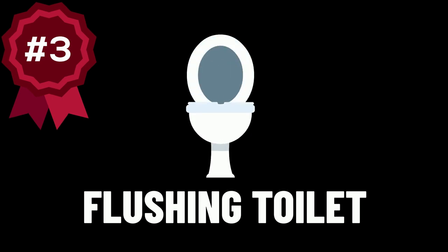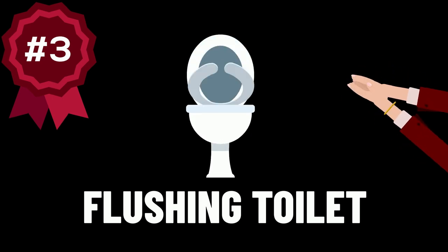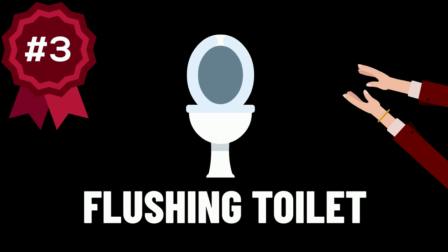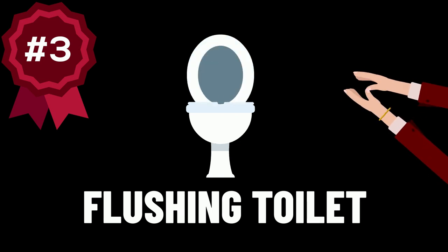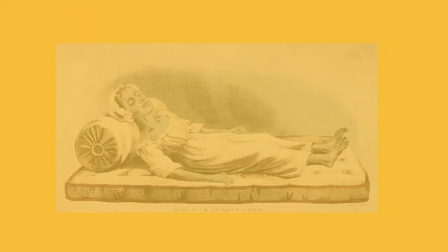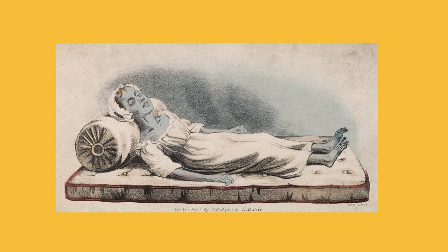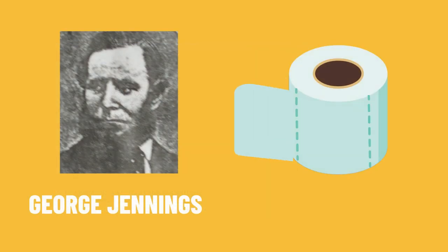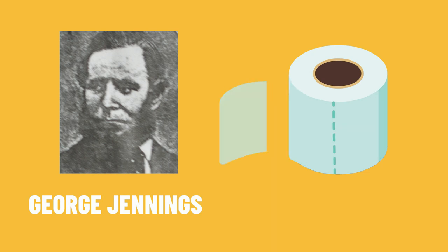Our next Victorian invention is one we can all be very grateful for: the flushing toilet. In Victorian London there were huge outbreaks of cholera in the 1830s and 40s, which led to tens of thousands of people dying. With Britain building new waste management systems, George Jennings designed a flushing toilet to flush waste into the newly constructed sewers.